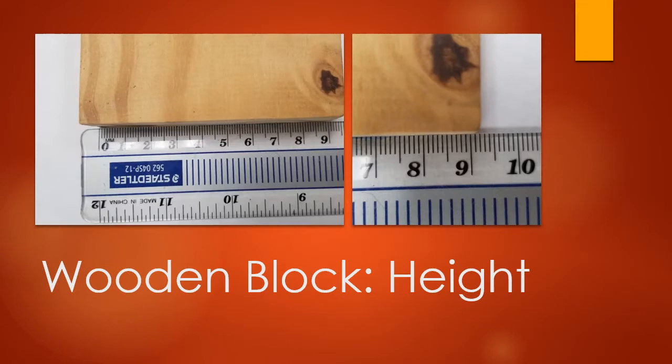Next, let's look at the height of the block. I have two pictures — one showing the total height, the next showing a close-up. You can see the height is nine point something — 9.1, 9.2, somewhere in between. That's for you to decide. Just make sure that you are recording your height to two decimal places. Don't forget the units: centimeters.